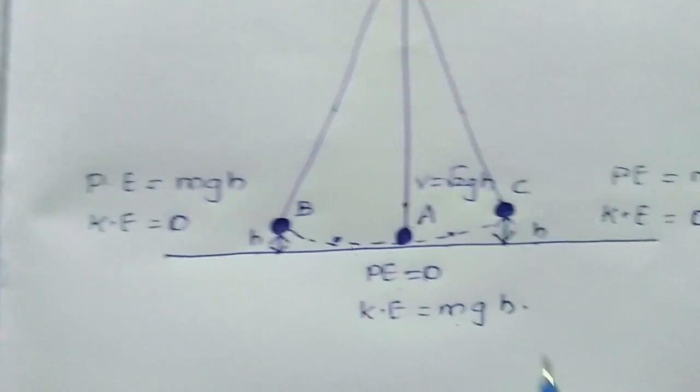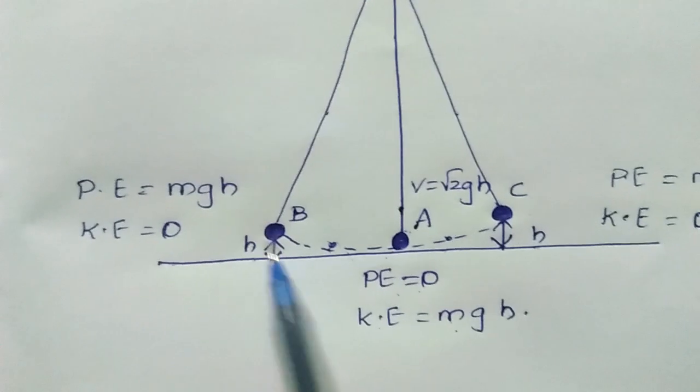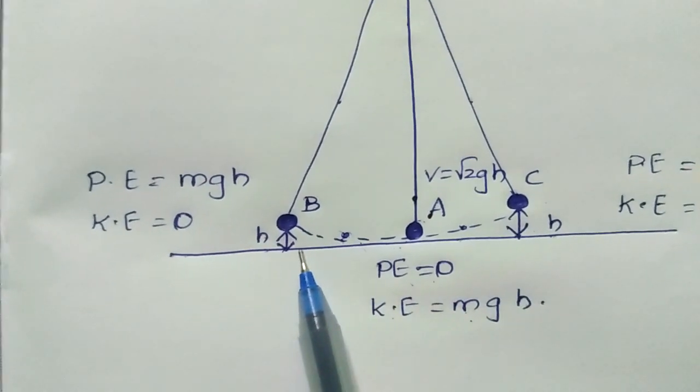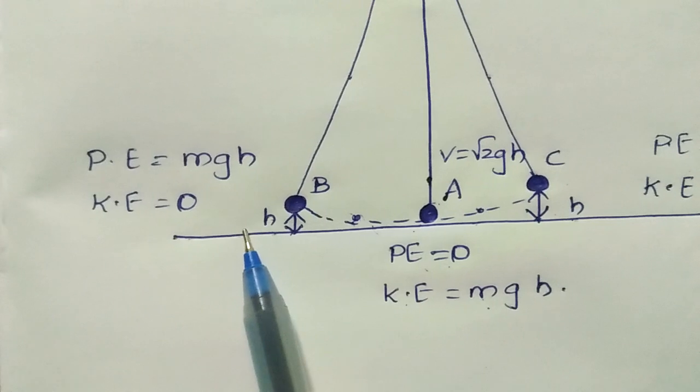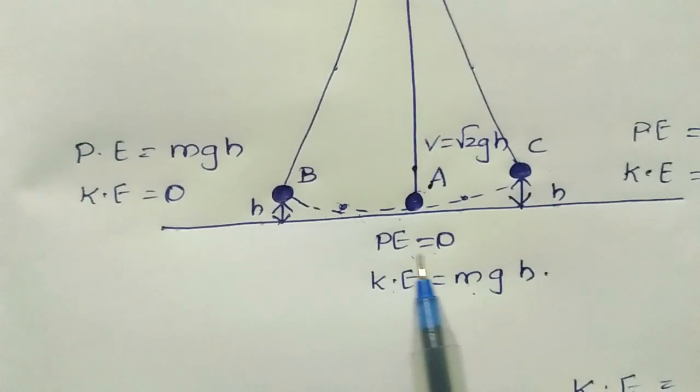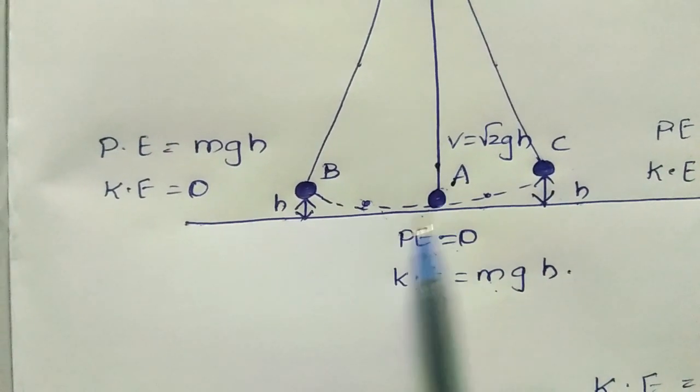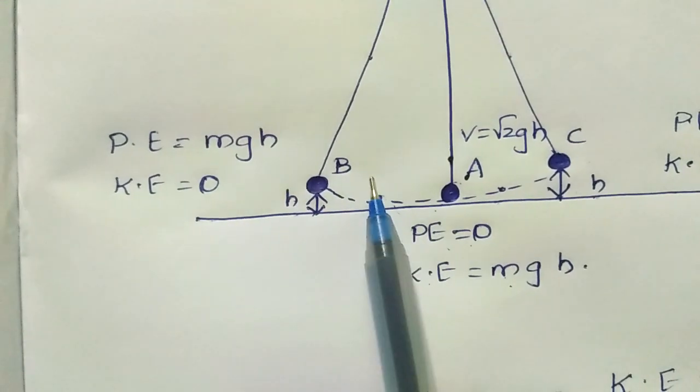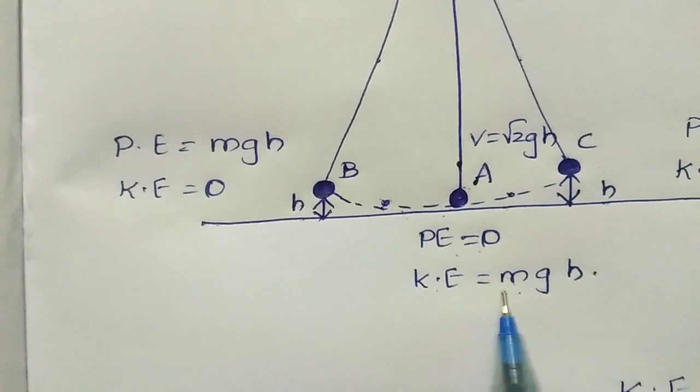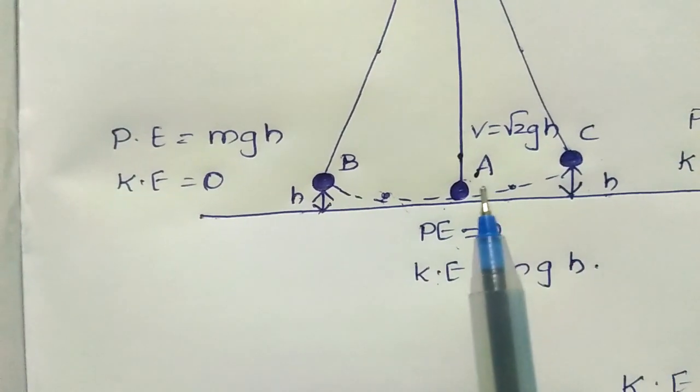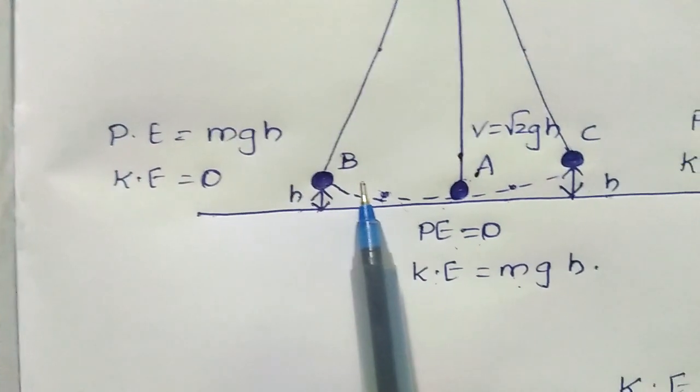Again, the same phenomenon. Moving from A to B, an increase in height is observed. An increase in height means increase in potential energy. The potential energy at point A is converted to kinetic energy at point B, and the kinetic energy mgh is converted into potential energy at point B.